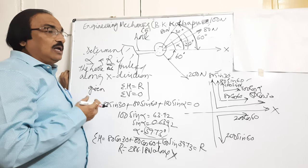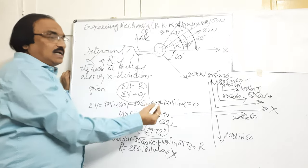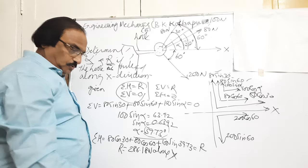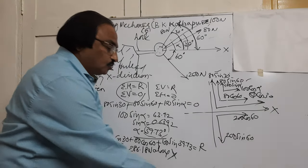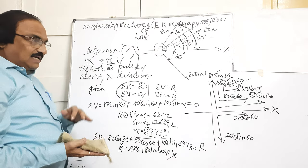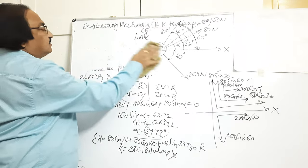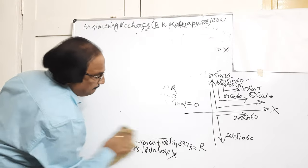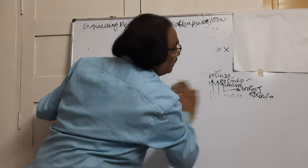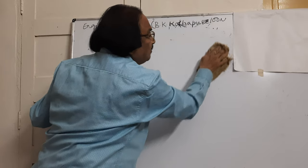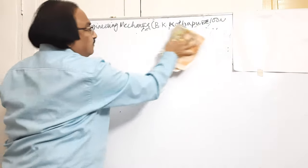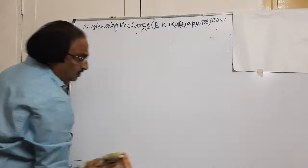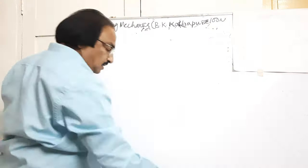Suppose the same problem asks for the resultant along the y direction. Then vertical will be R, meaning sigma H will be equal to 0. So knowing the conditions, you can solve the problem. The key point is that first you should be able to resolve the forces correctly — if the resolution is wrong, the whole answer will be wrong.